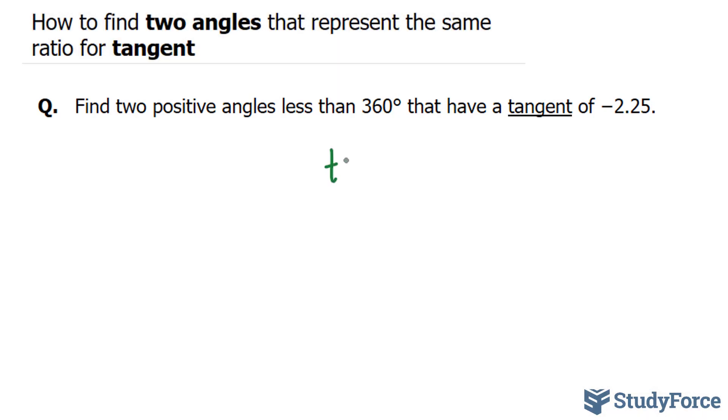So what we have is tangent theta equals negative 2.25. And what we're looking for are two angles that will end up giving us this ratio.